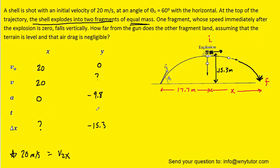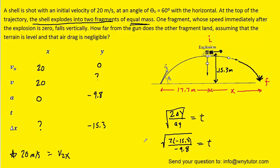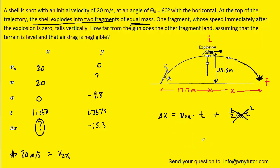Our objective is to first find the time using the y-direction information. The initial velocity in y for this phase is zero, so that term drops out. Multiplying both sides by 2, dividing by acceleration, and taking the square root to isolate time, then filling in known values, we again get 1.767 seconds — not surprising, since the particle falls the same y-displacement as before. Now we can solve for the x-displacement: with zero acceleration in x, delta x equals the initial x velocity times time, giving 35.35 meters.